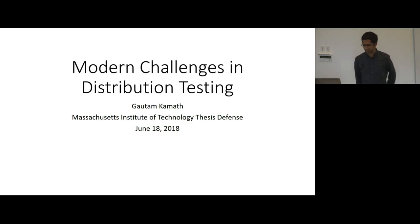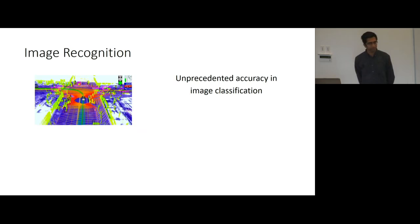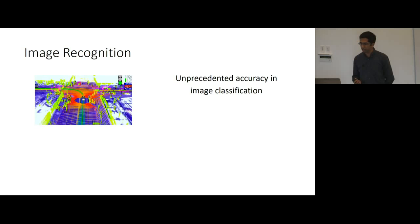So, modern challenges. I'm going to start by telling you what these modern challenges are, and then we'll move on to distribution testing. Let's start with some motivation. There's recently been a lot of advances in image recognition, which has fueled technology such as self-driving cars. The issue with these image recognition techniques is they seem to be strangely brittle in practice, or not very robust to adversarial attacks.